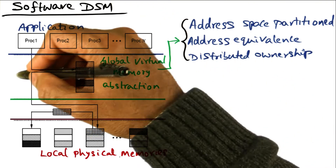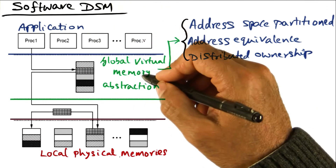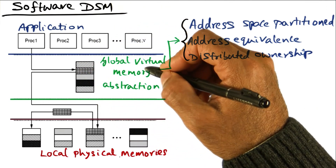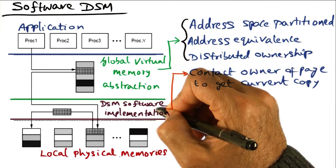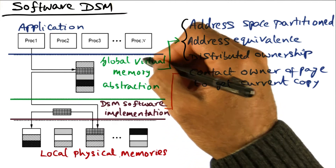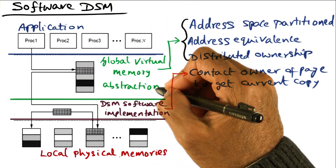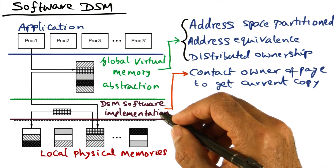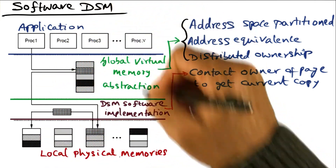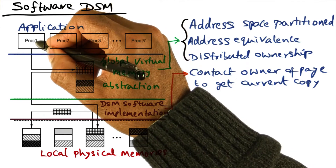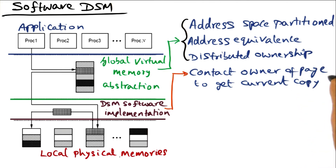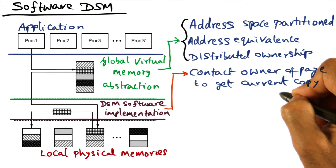This is the abstraction layer seen by the application that provides a global virtual memory solution. This layer is the DSM software implementation layer that implements this global virtual memory abstraction. In particular, this DSM software layer, which exists on every one of these processors, knows at the point of access to a page by a processor who exactly to contact as the owner of the page to get the current copy of the page.